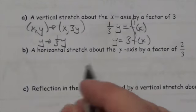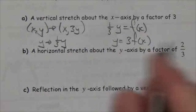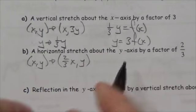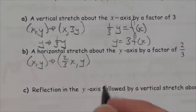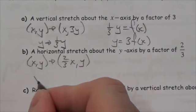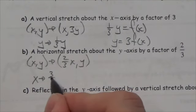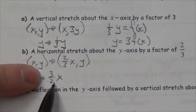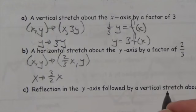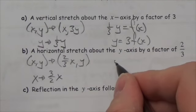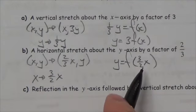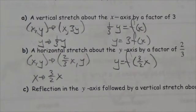For a horizontal stretch about the y-axis by a factor of 2/3: the image point is ((2/3)x, y). In the function, I replace x with (3/2)x, because to get x by itself I'd multiply by 2/3 — the stretch factor. So the function is y = f((3/2)x). We leave it like that since we don't typically solve for x.